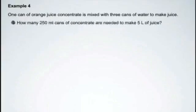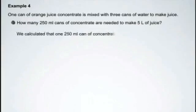So the first thing is how many 250 milliliter cans of concentrate are needed to make 5 liters of juice. Well we could set this up and do it as we've done before, but we calculated in example three that one 250 milliliter can of concentrate will make 1 liter of juice.